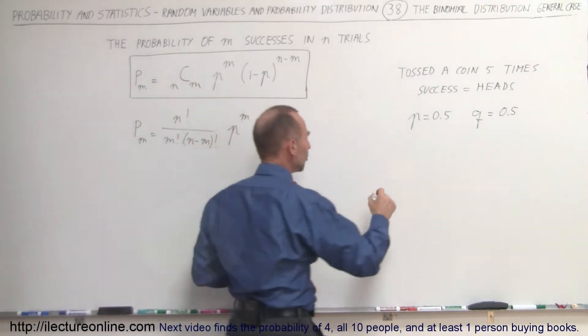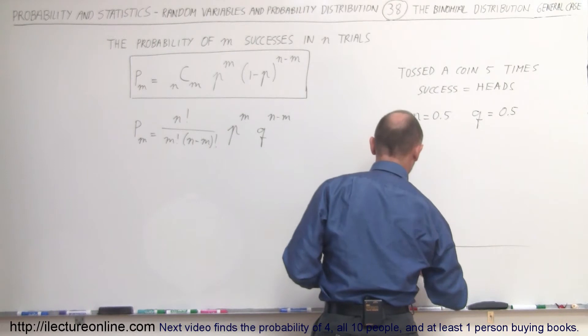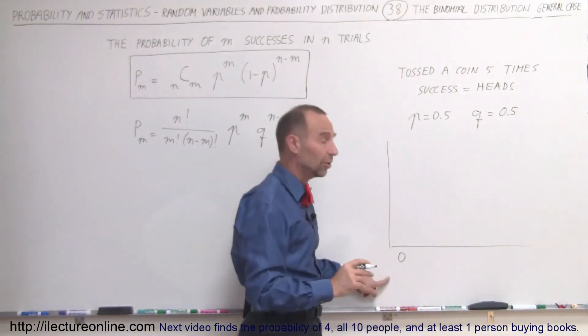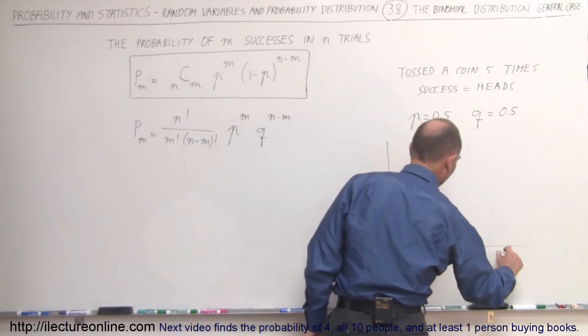When we looked at the distribution, the binomial distribution, you could have zero heads so no successes at all. We could have one head, two heads, three heads, four heads, and five heads.